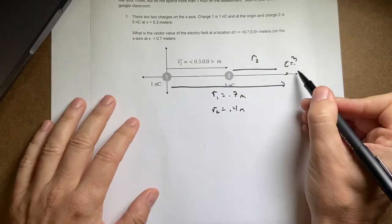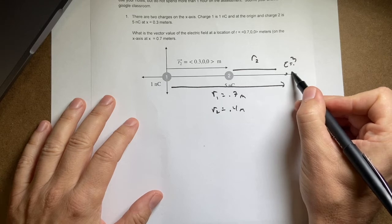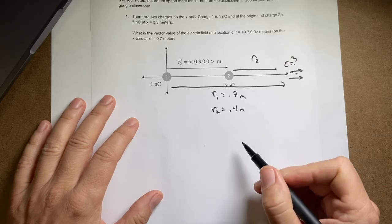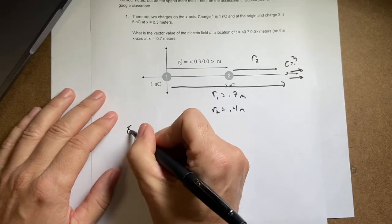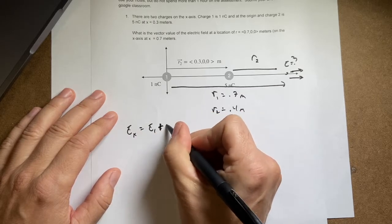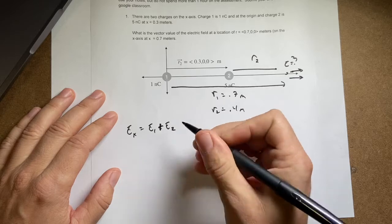Now I can find them. Both of these are going to have electric fields. They're both positive. Right? They're both positive that way. They're both in the positive x direction. So I can find the magnitude of these and then the X component of the total would just be E1 plus E2.